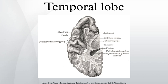New memories: The medial temporal lobes are thought to be involved in encoding declarative long-term memory. The medial temporal lobes include the hippocampi, which are essential for memory storage; therefore damage to this area can result in impairment in new memory formation leading to permanent or temporary anterograde amnesia.